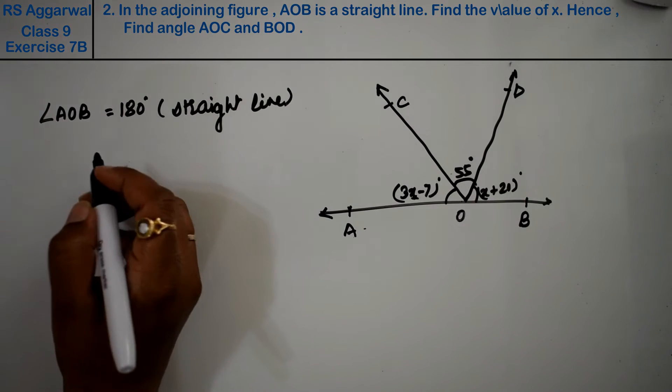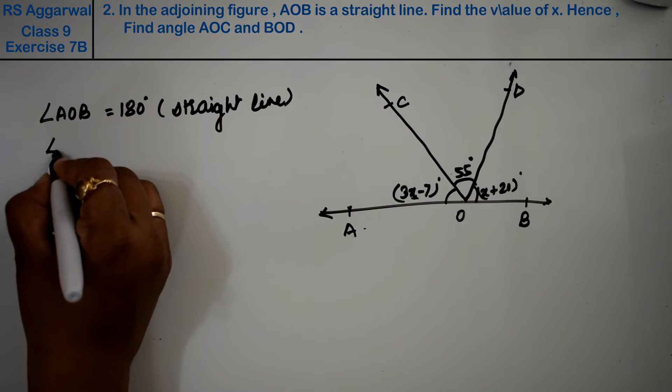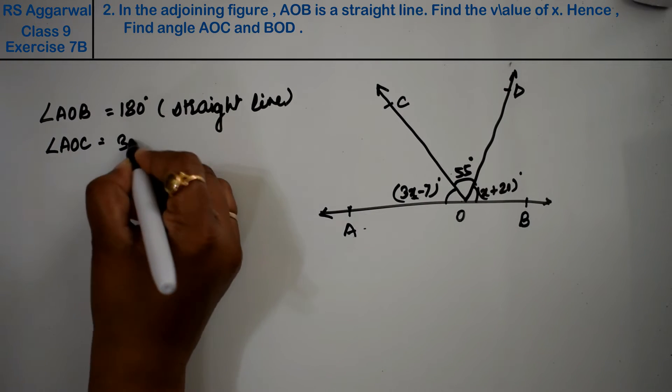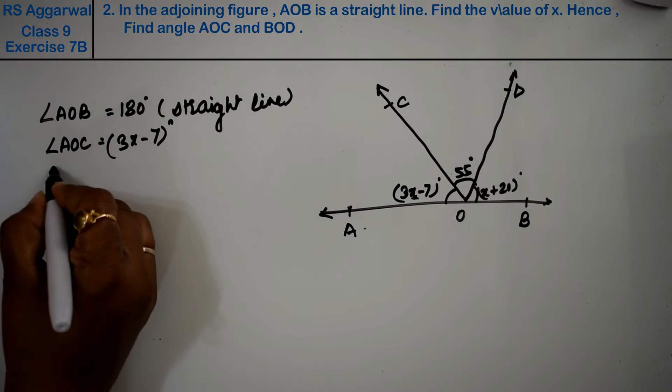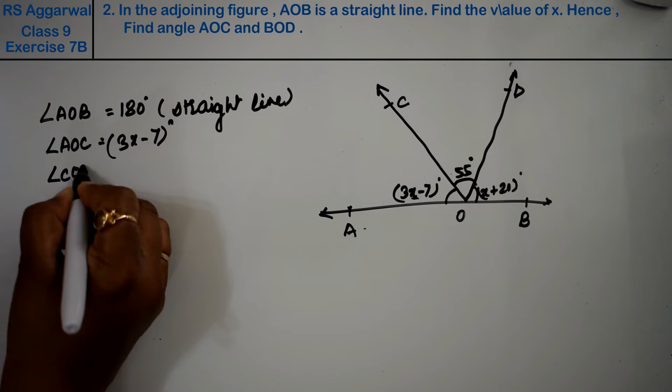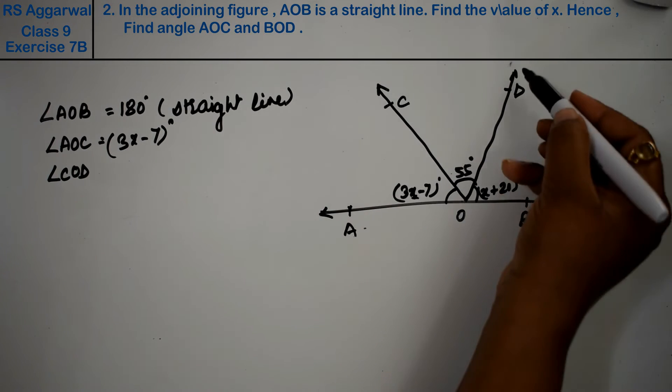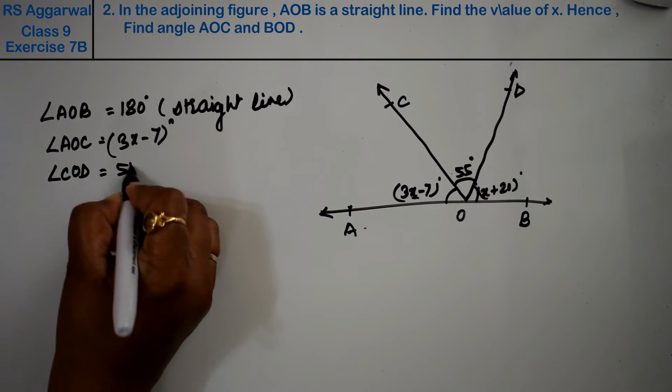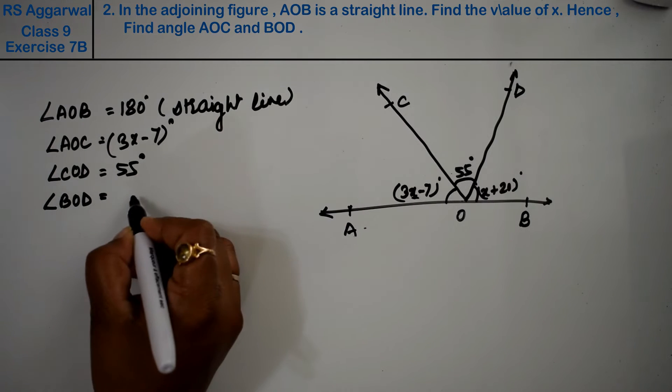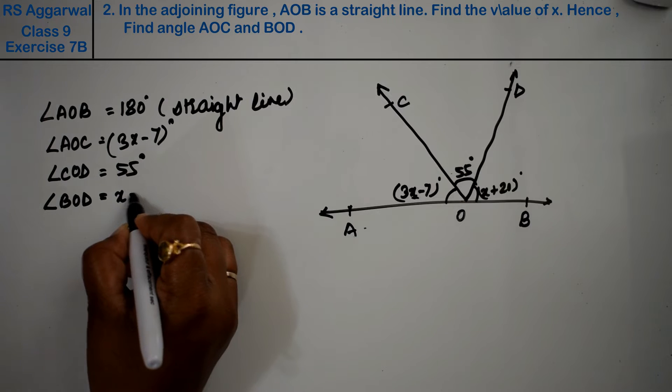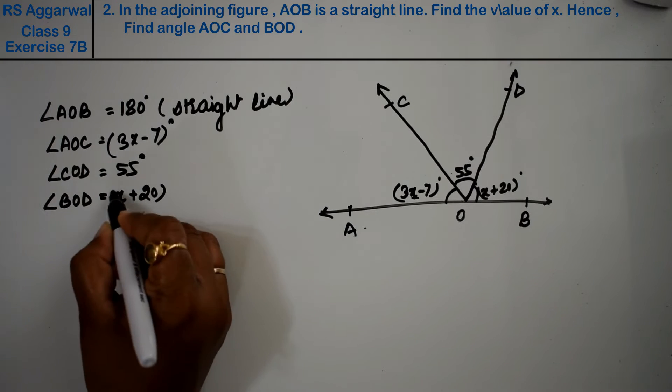Using the straight line theorem, angle AOC is 3x minus 7 degrees. Angle COD is 55 degrees. Angle BOD is x plus 20 degrees.